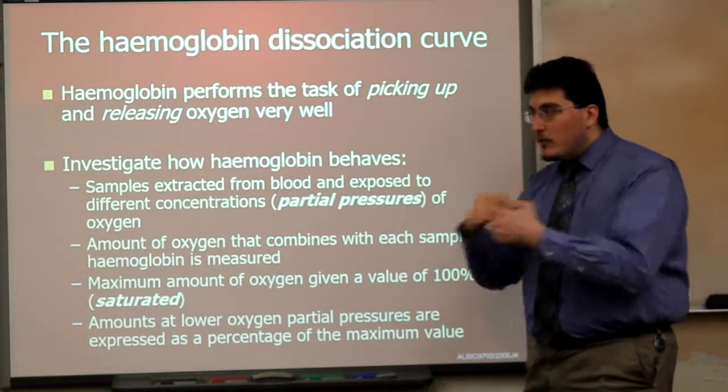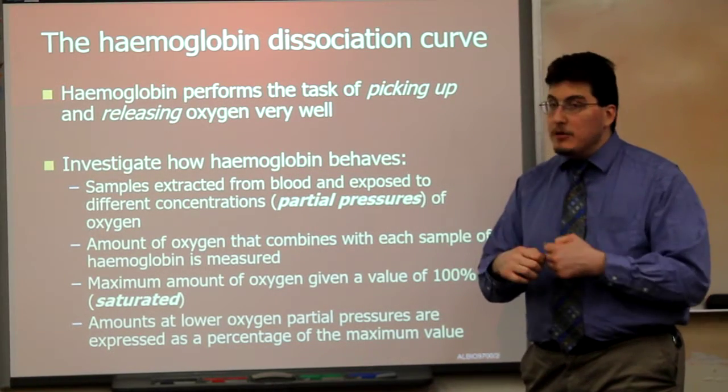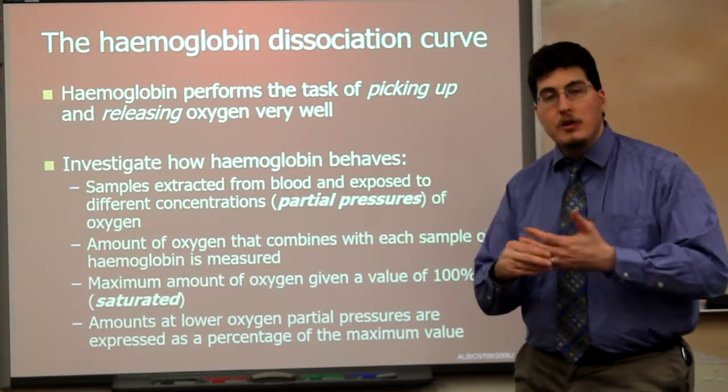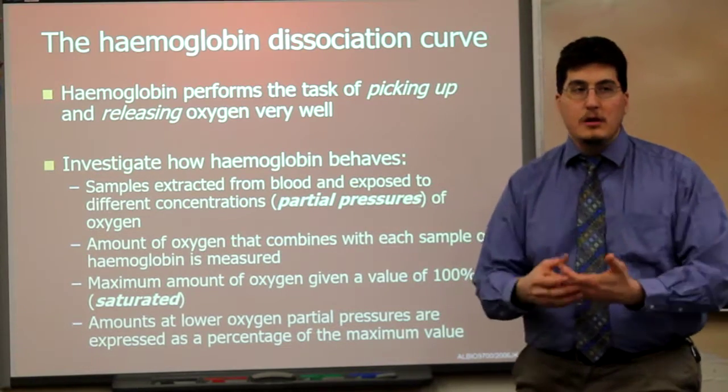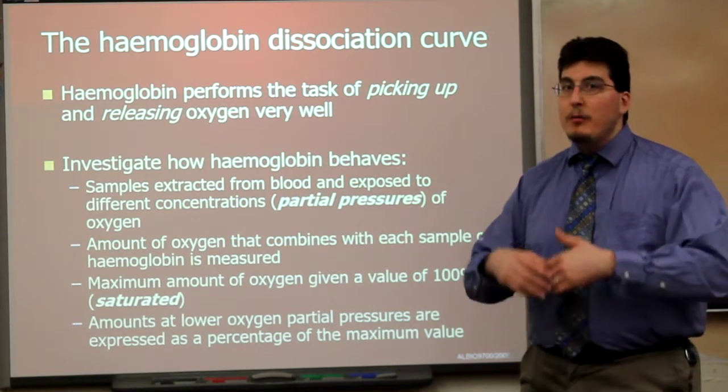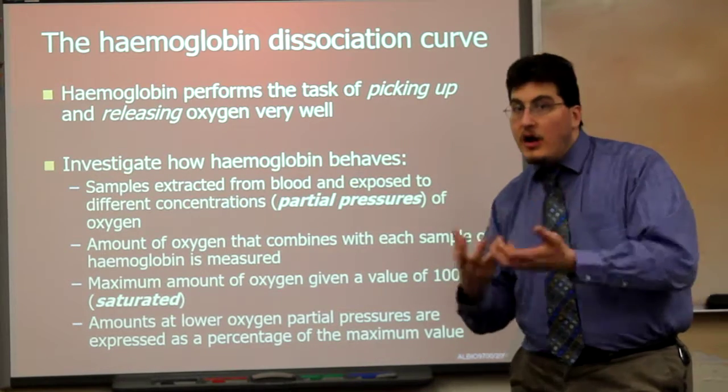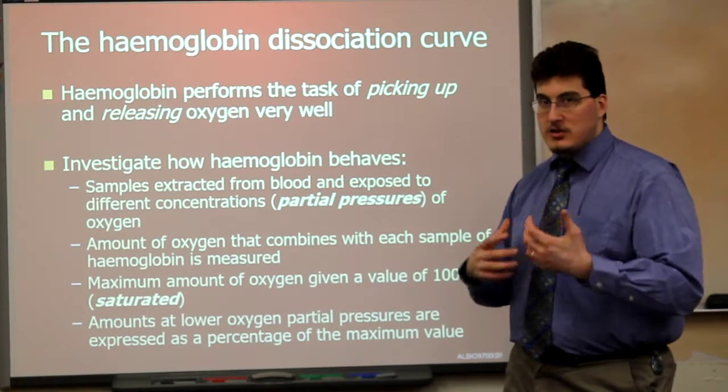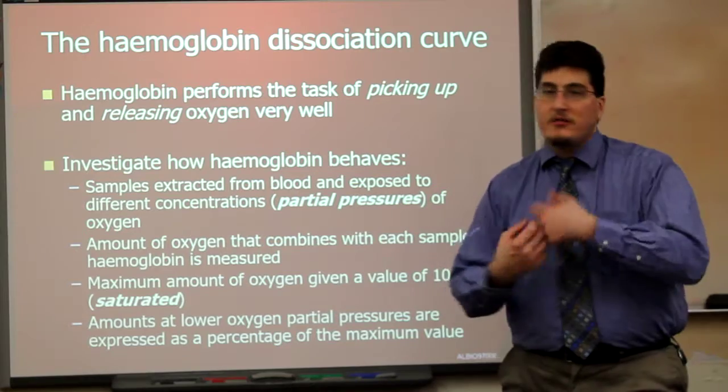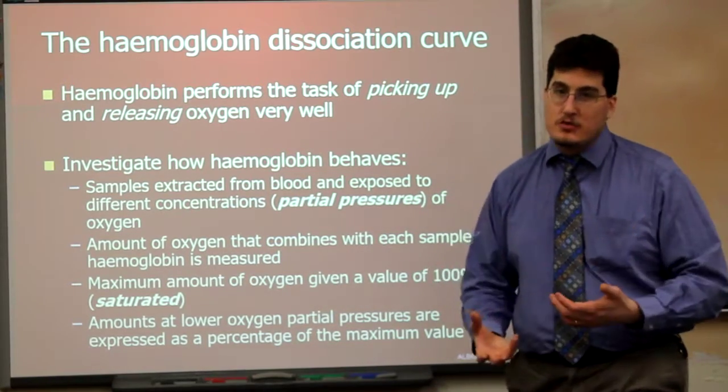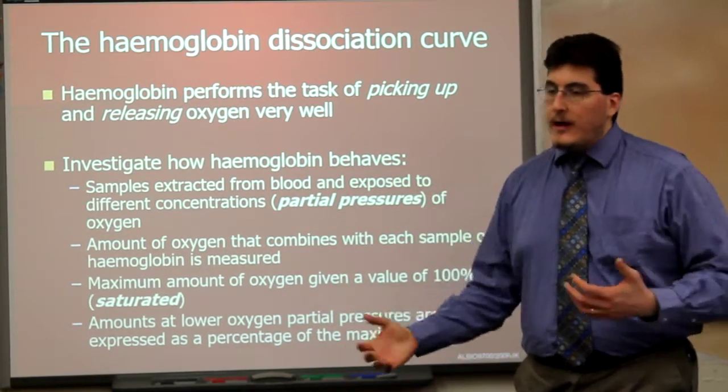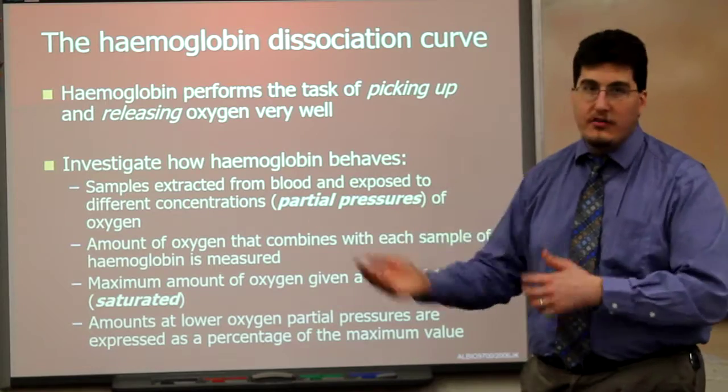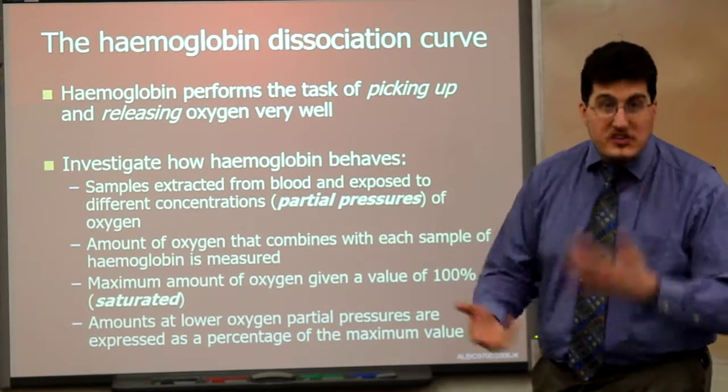The amount of oxygen that combines with each sample of hemoglobin can be measured. When you completely fill all of the hemoglobin hemes in your sample, that will be 100% saturation. If you have 100 hemoglobin molecules and all four heme groups have one oxygen molecule on them, that's 400 molecules of oxygen, 100% saturation. For every 100 molecules of oxygen you take away, that's 25% saturation gone.